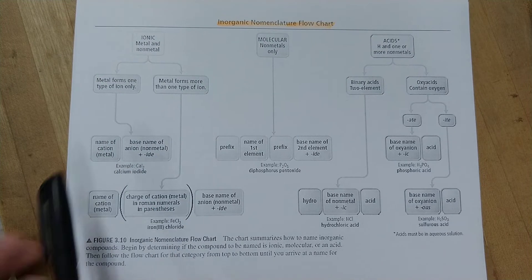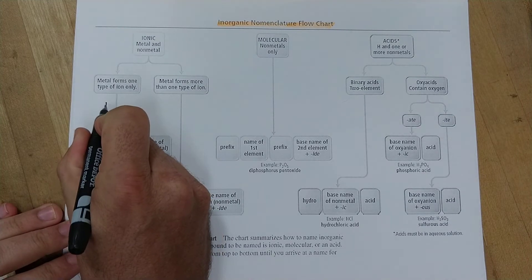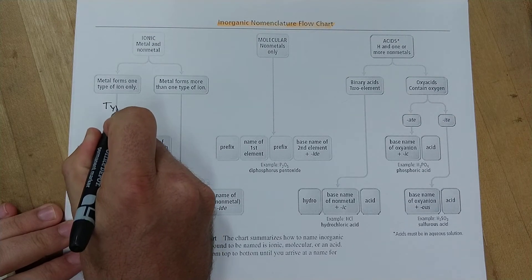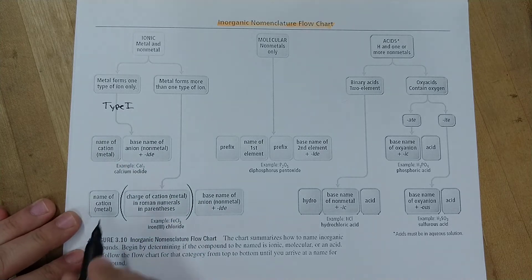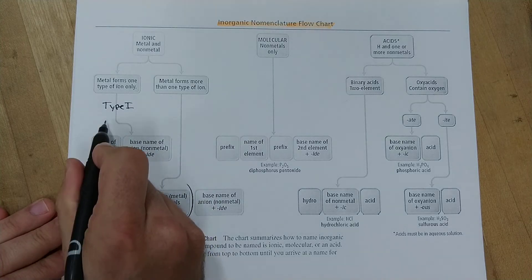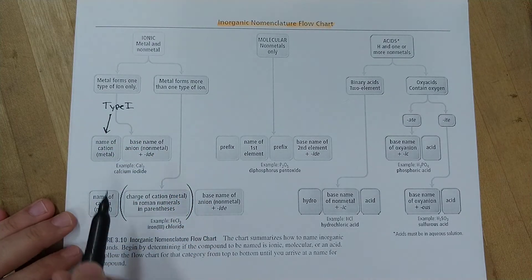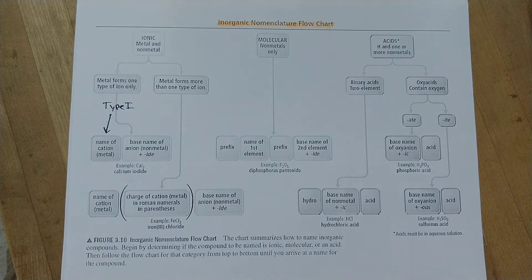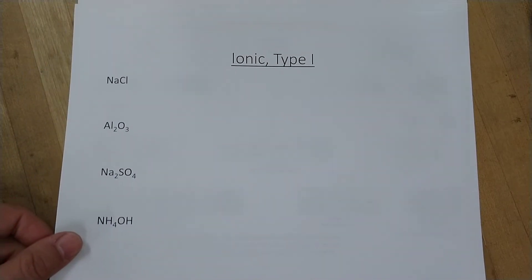We're going to start with what chemists call a Type 1 ionic compound. It involves a Type 1 metal, meaning it forms only one type of ion. We'll look at four examples of Type 1 ionic compounds.